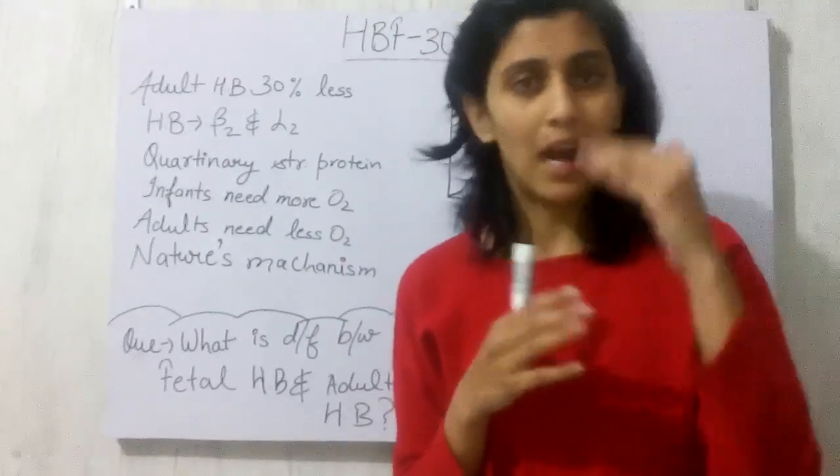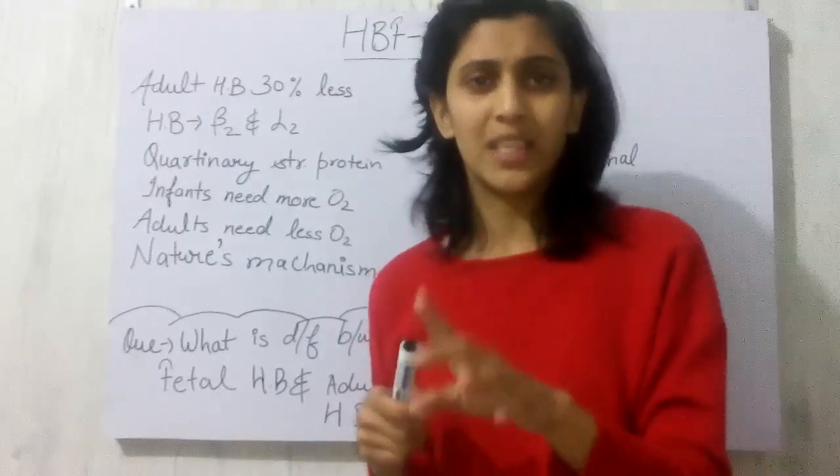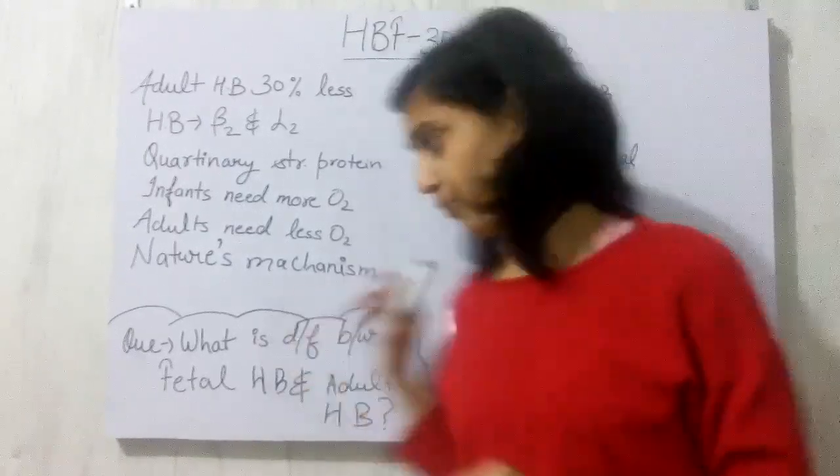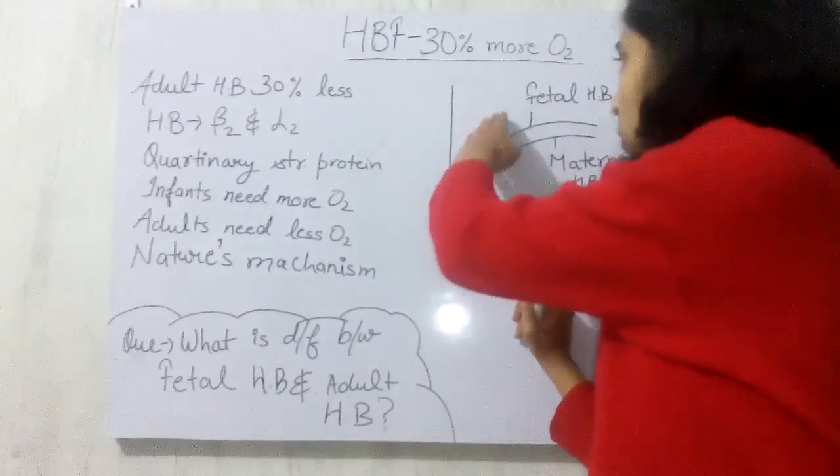Now this would be more clear with a graphical representation I would like to show you. Point to remember here: the line on the left side is indicating more affinity, while the line on the right side is indicating less affinity.